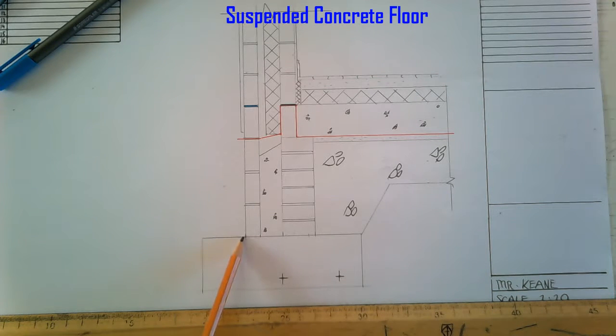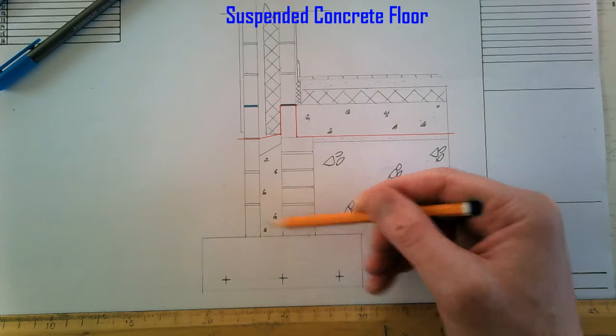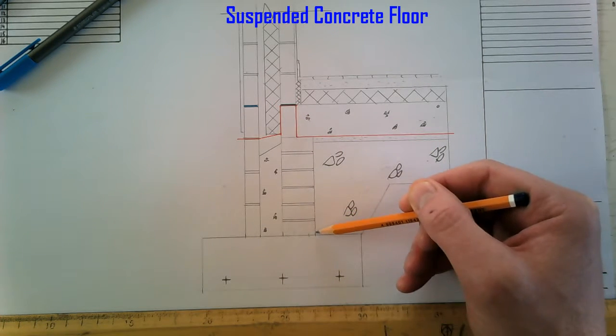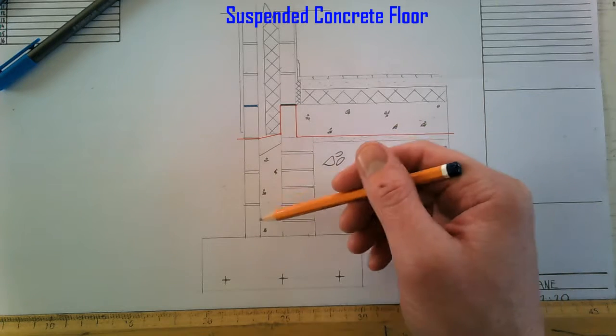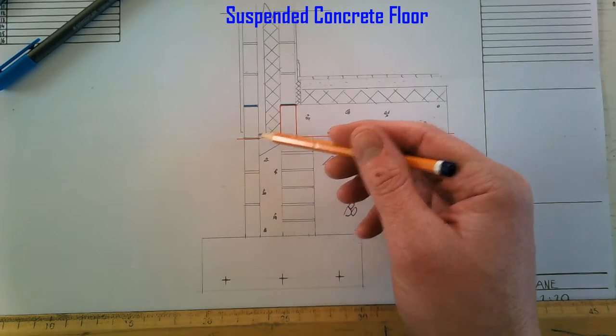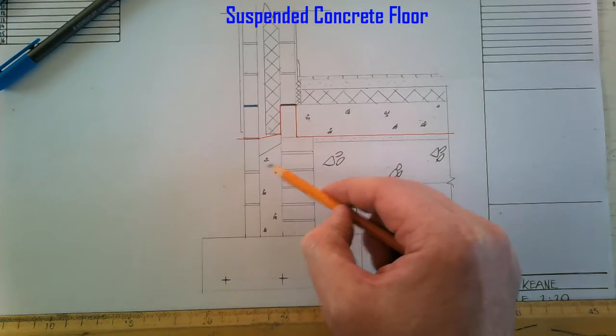Come in 295mm, outer leaf 100mm, 150mm cavity, and then we put the block on the flat. So the blocks are 215mm, so on the flat we'll come down 215mm. So six blocks on the flat brings you up to the same height as three blocks on the edge. Put in your concrete infill.